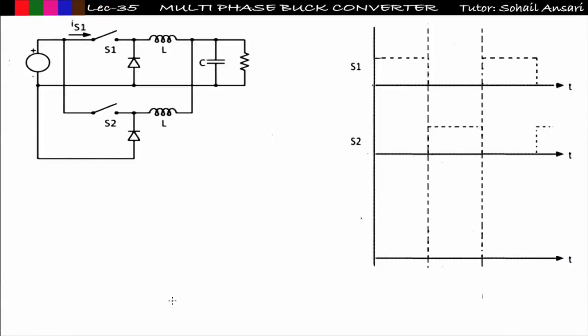Hi guys, welcome to Getmatic. In the previous lecture we saw the different types of DC-to-DC converters: the buck converter, boost converter, and the buck-boost converter in discontinuous conduction mode. In this lecture we will start another kind of converter, that is the multi-phase buck converter, or you can say interleaved buck converter. So let's get started.